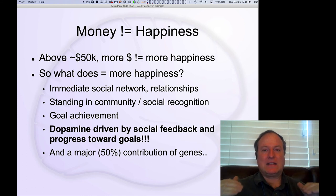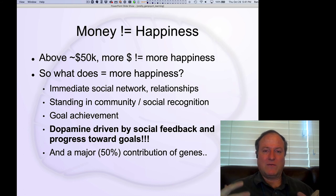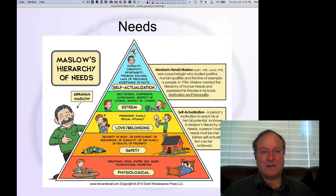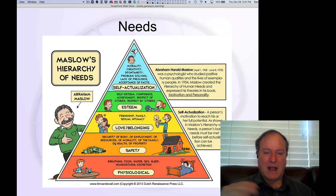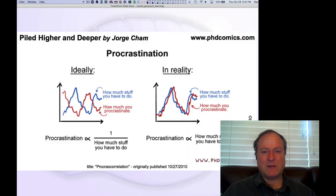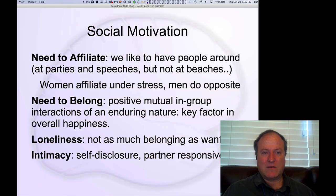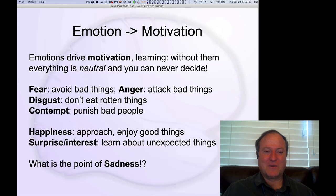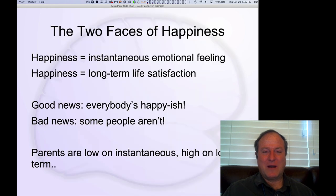Below a certain level you face real life adversity and stress dealing with basic physiological needs. Going back to Maslow's pyramid — if your basic physiological and safety needs aren't being met, those things will really impact you. But once a certain amount of money addresses those basic survival needs, beyond that it isn't really about the money. That's important to keep in mind when considering grad school or other careers.